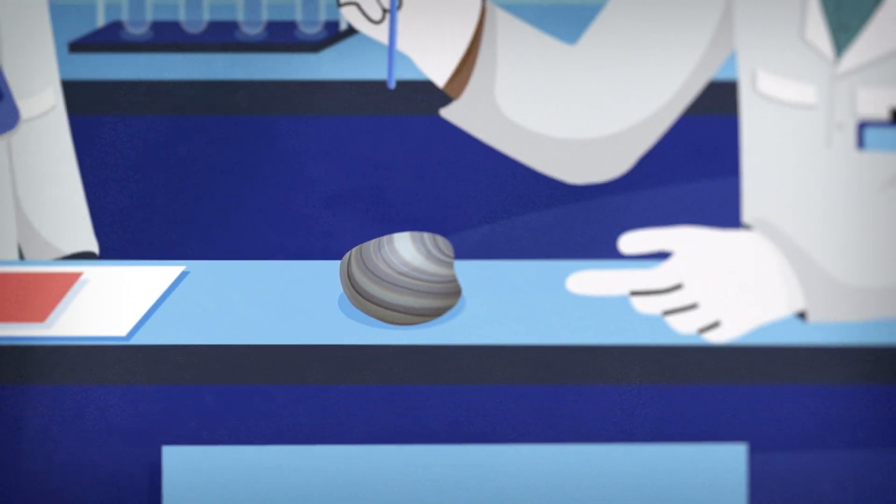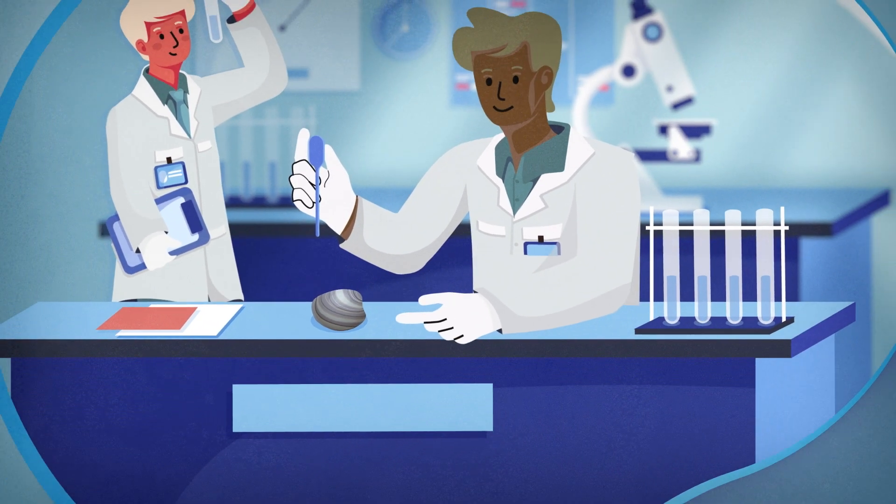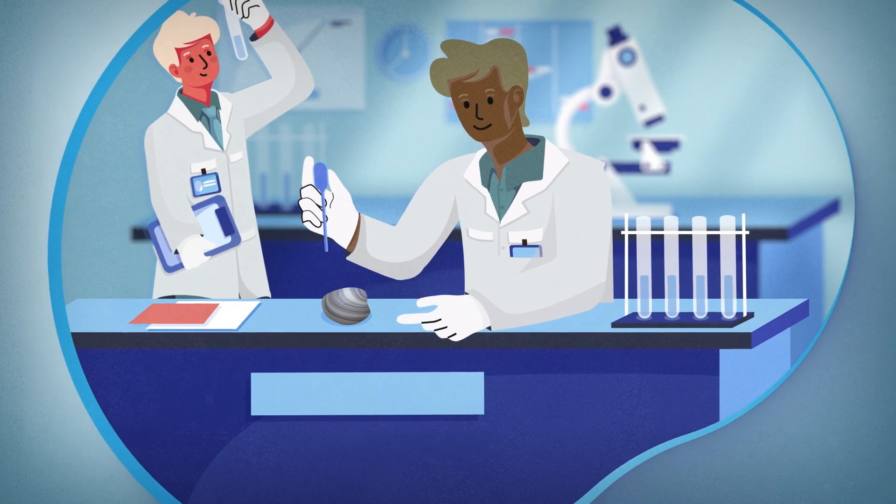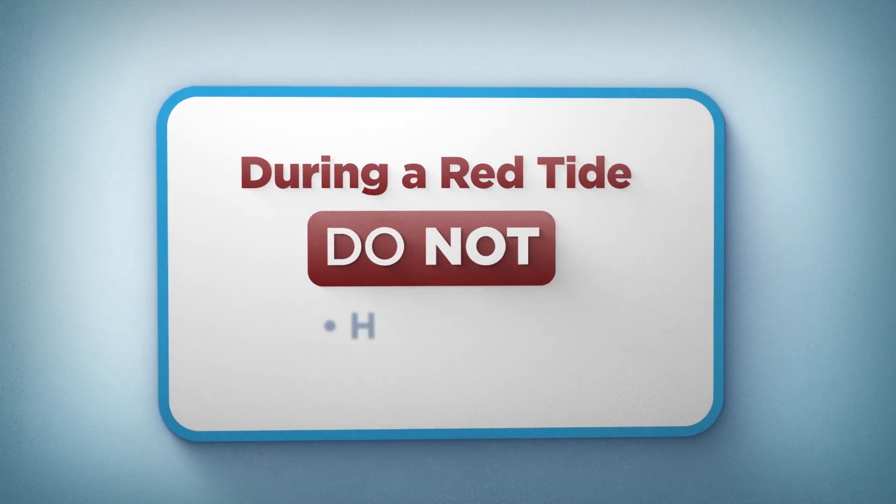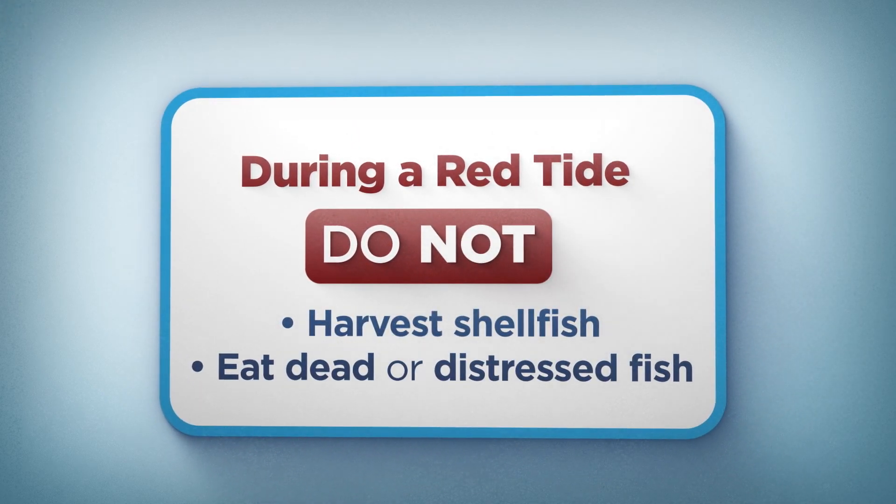Red tide toxins also accumulate in shellfish such as oysters and clams, which if consumed, can lead to neurotoxic shellfish poisoning. During a red tide, don't harvest shellfish or eat dead or distressed fish.